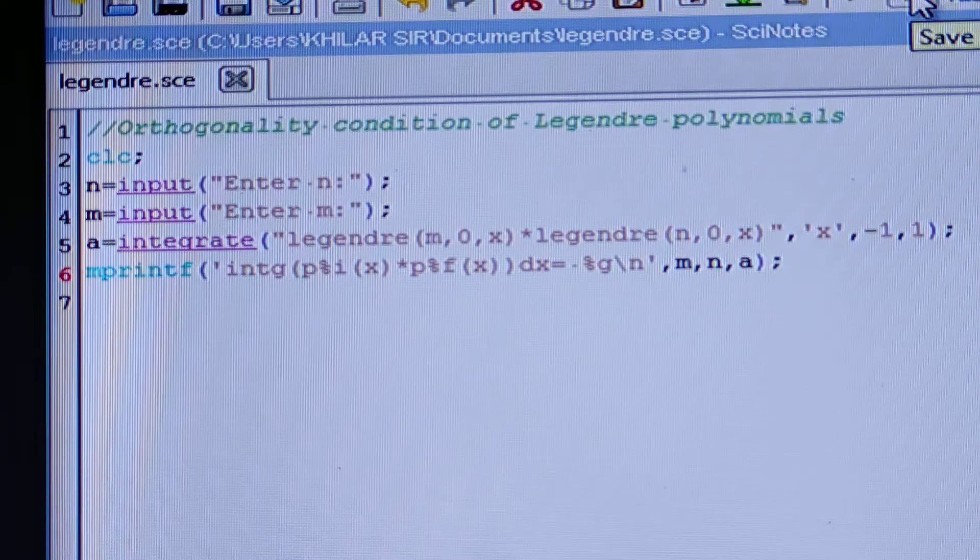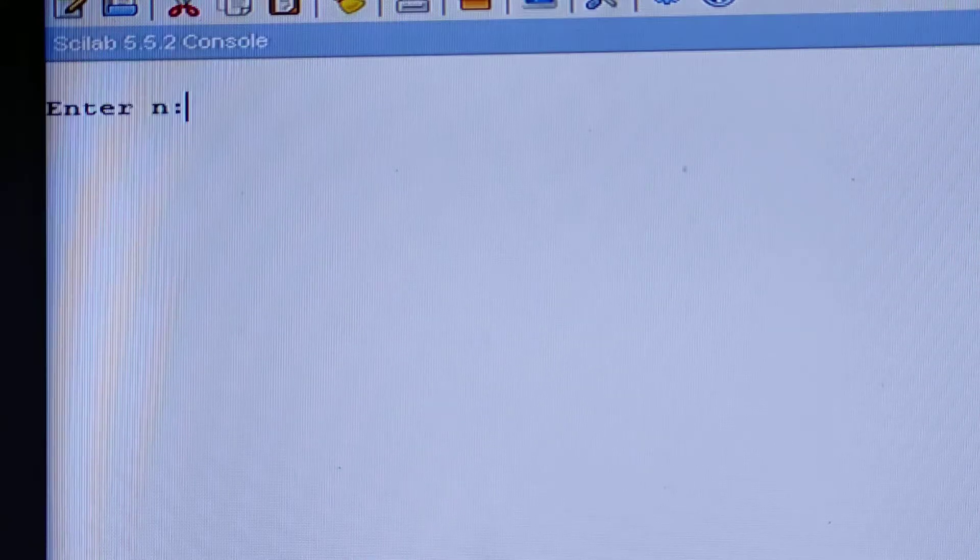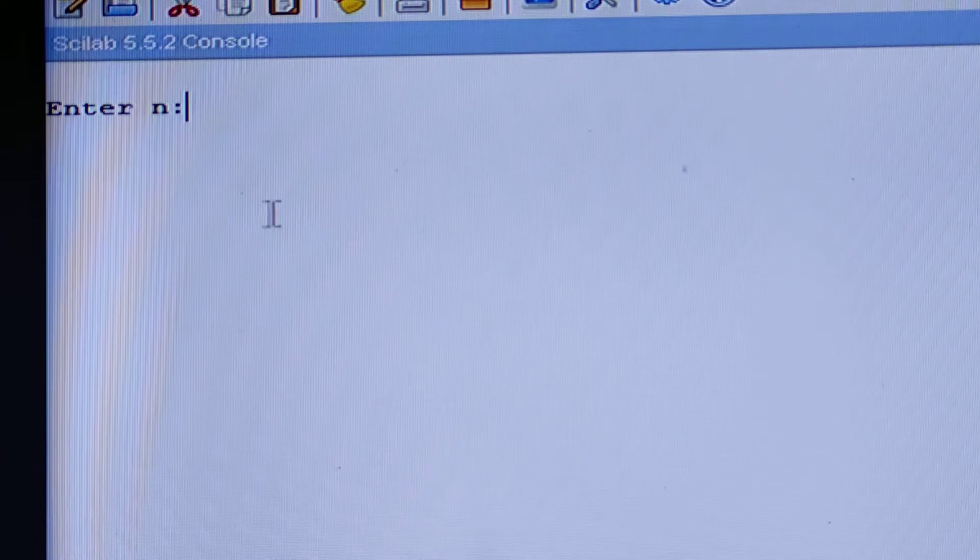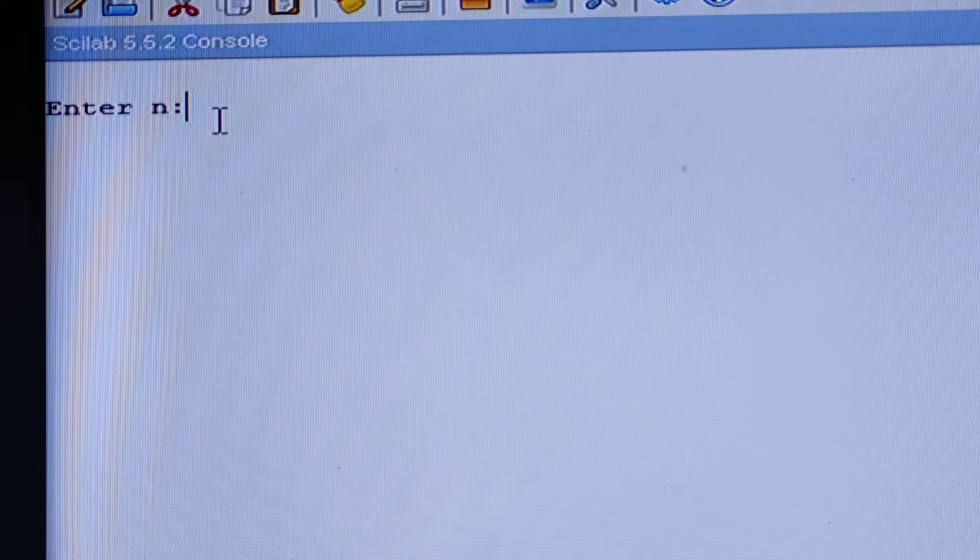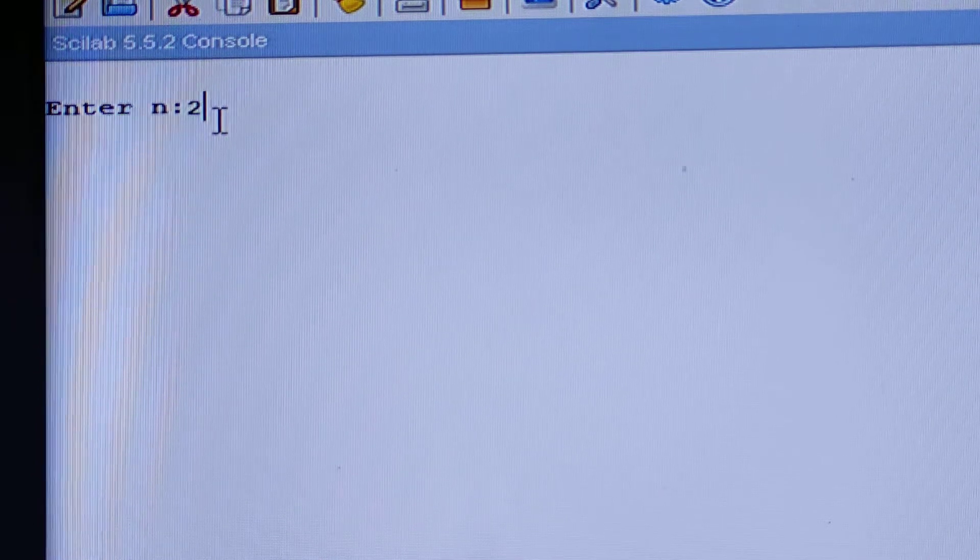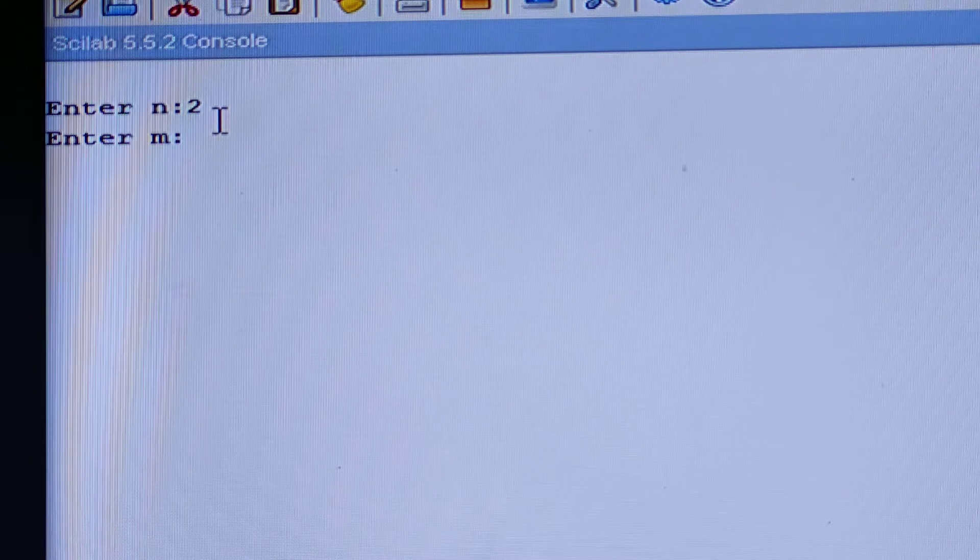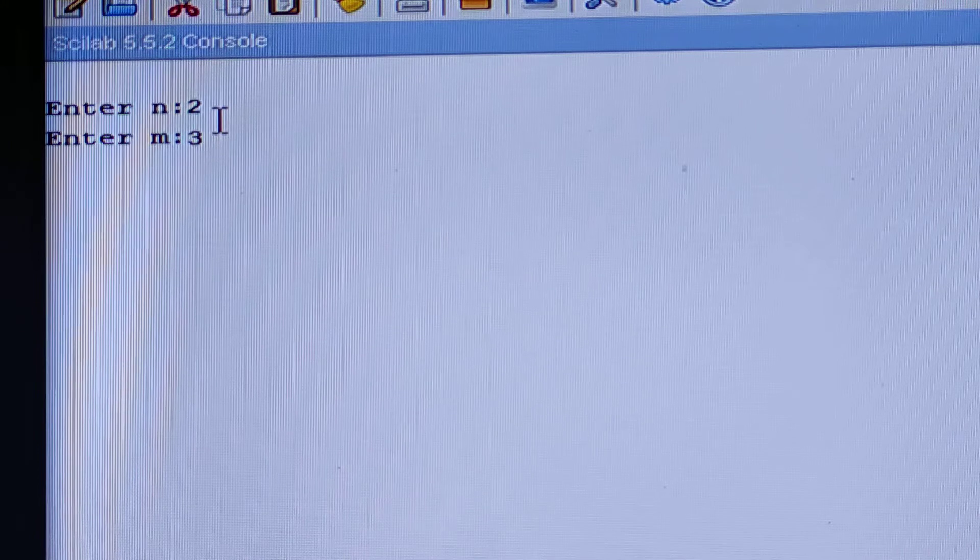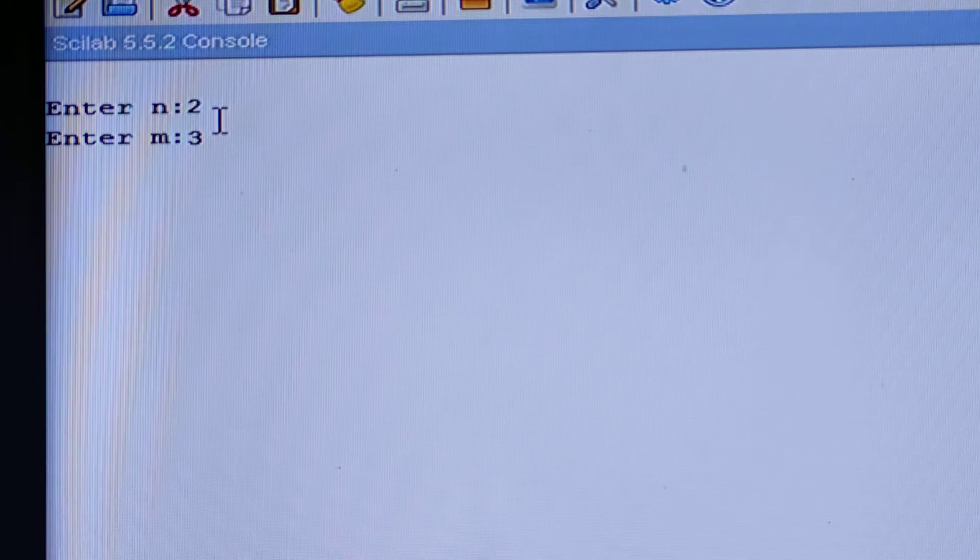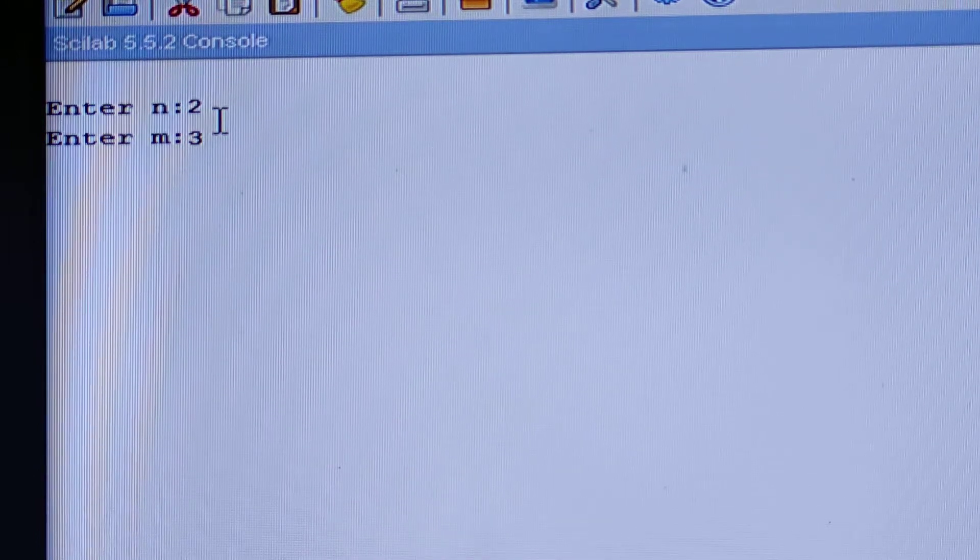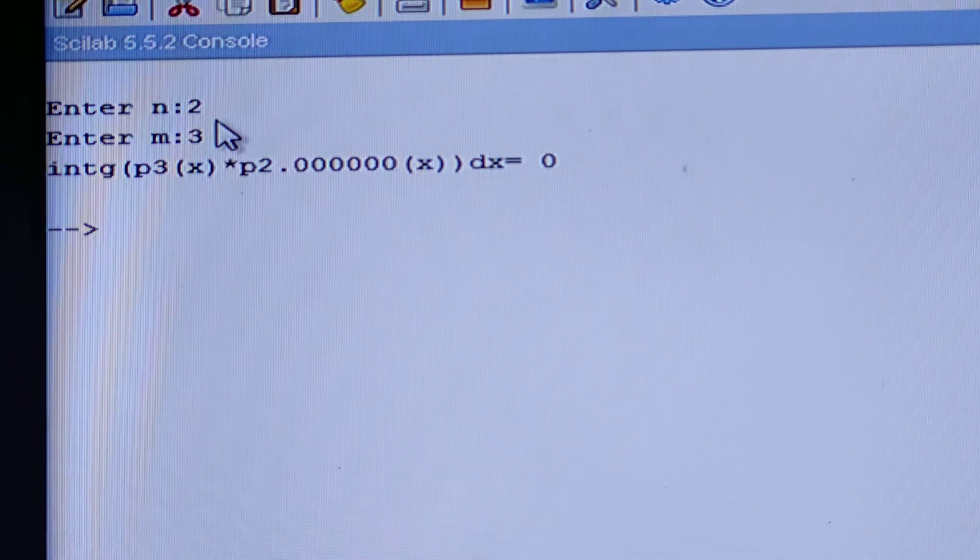See here, I am executing. So it will execute, then the console - see here it is asking to give the value of N. Suppose I am giving the value of N as 2, then press enter key. Then it is asking you to put the value of M. For example, I am giving 3. That means M and N are unequal, so according to theory, if M and N are unequal, then the value will be equal to 0. So let us press the enter key. See here, the answer is 0.